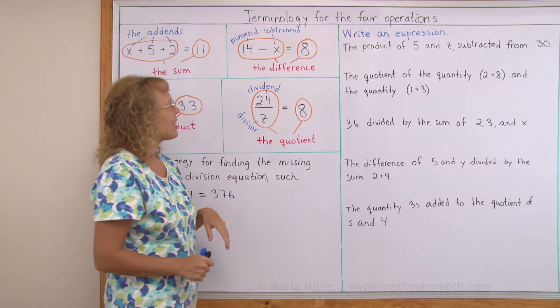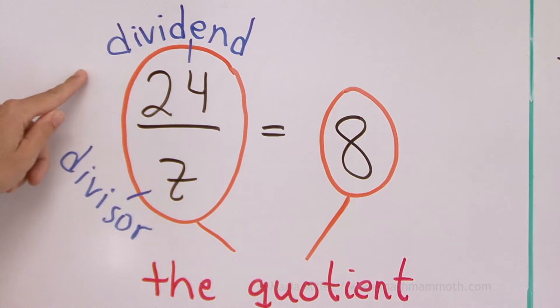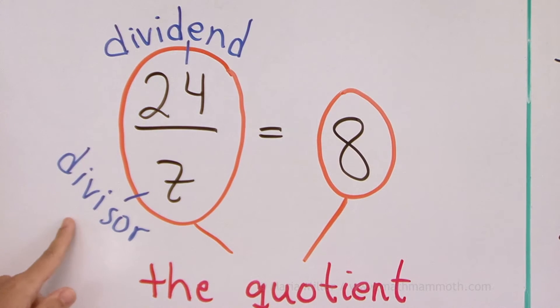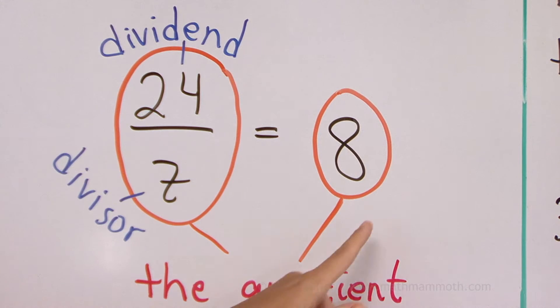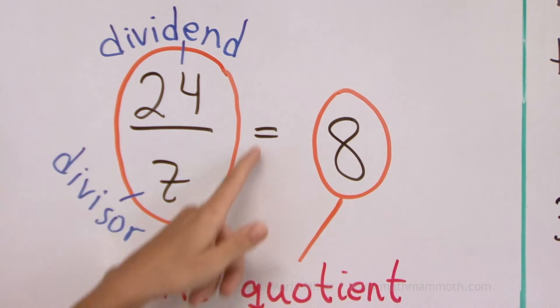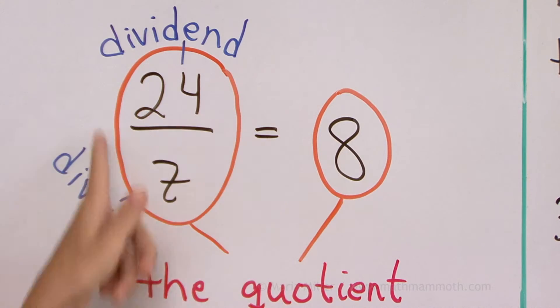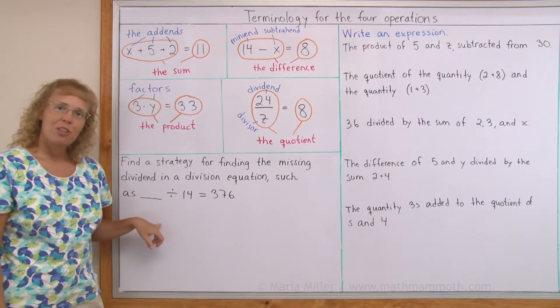And then lastly, in division, the number we divide is the dividend. And then the number that is dividing is the divisor. The answer is the quotient. Or this expression here is also called the quotient. It's the quotient of 24 and z. Over here you can do some thinking.